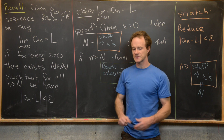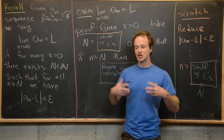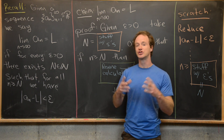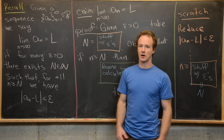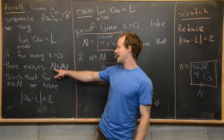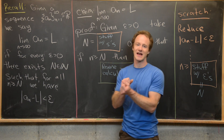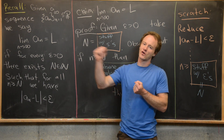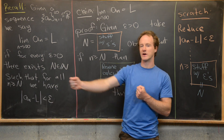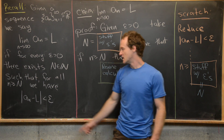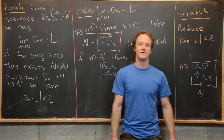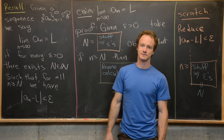In other words, any challenge you give me of an epsilon — which is super small — I can find an N such that if we are further than that point in the sequence, then our sequence is within epsilon of that limit.